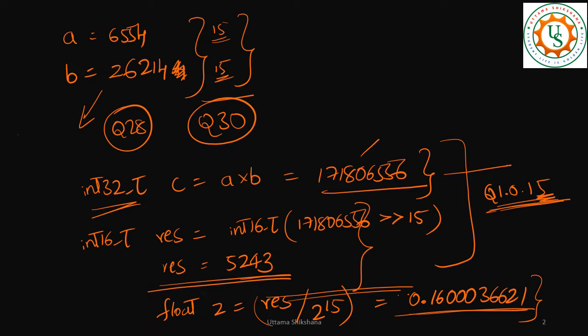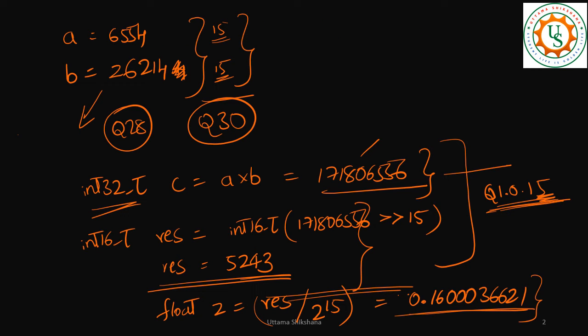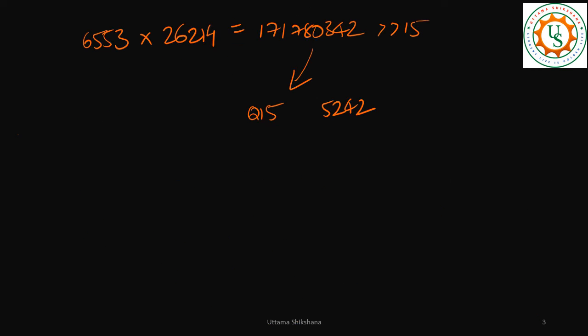But let us see, what if I don't do this 0.5? Then this number will be 6553, right? 6553 into the other number, which is 26214. So what is the multiplication of this? I am going to do the multiplication. So the number is 171780342. So again I need to do the right shift of this number by 15 to get back in the Q15 format. That will become 5242. What was my earlier number? 5243.